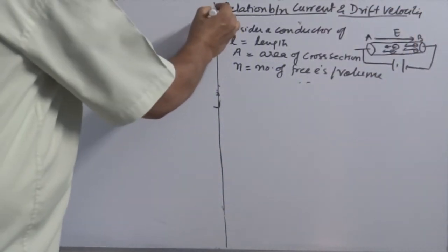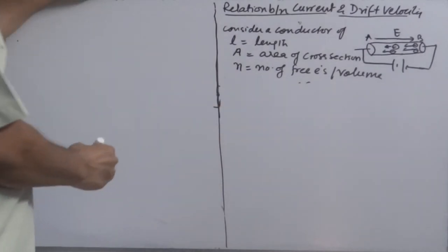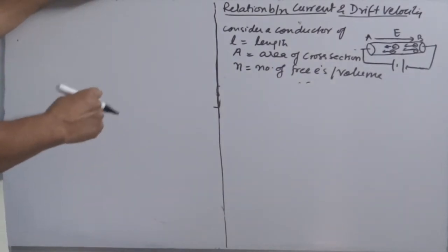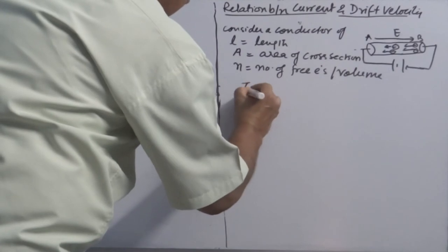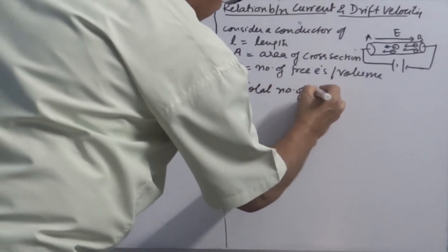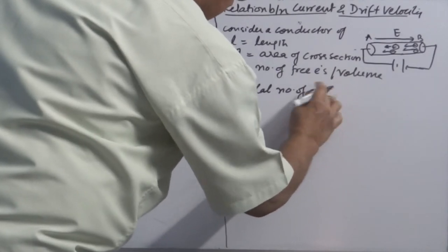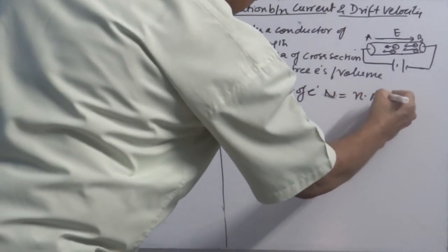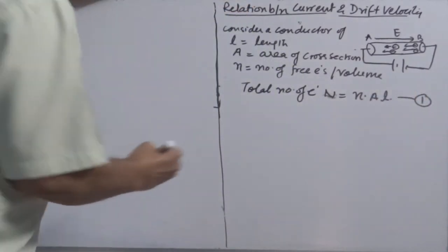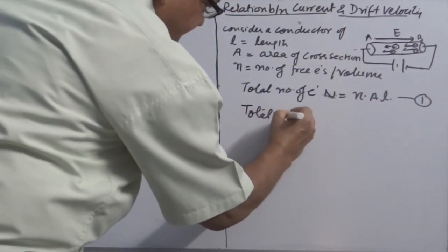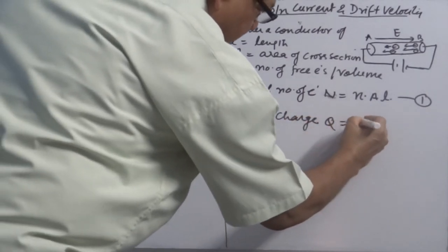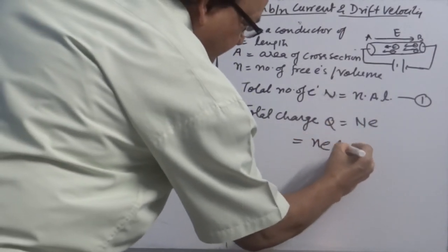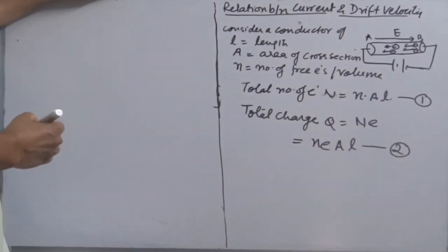Whenever potential difference is applied across the conductor, current begins to flow and electric field is set up within the conductor. We can count the total number of electrons in the conductor: total N = (number of electrons per unit volume) × (A × L), where A × L gives the volume of the conductor. Total charge Q in the conductor: Q = N × e × A × L. This is equation number 2.